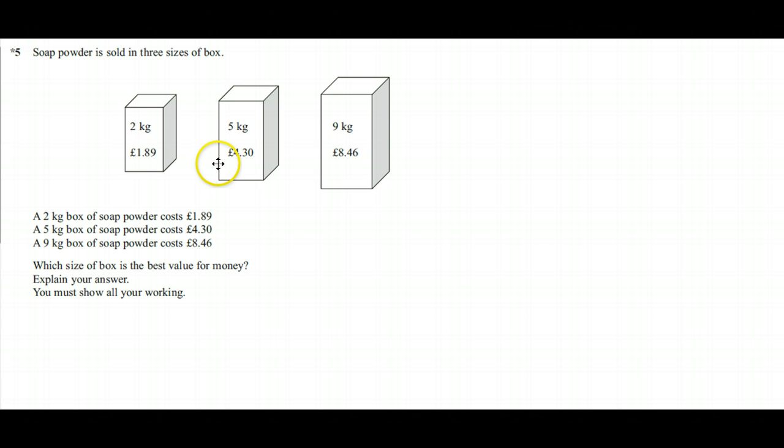Hi, this is question 5 from the June 2012 Unit 3 Edexcel Higher paper. It's a functional skills best buy sort of question. The key thing is you'll notice there's a little star next to the question number, which means that spelling and grammar will contribute to the marks. You need to have a full written answer at the end.